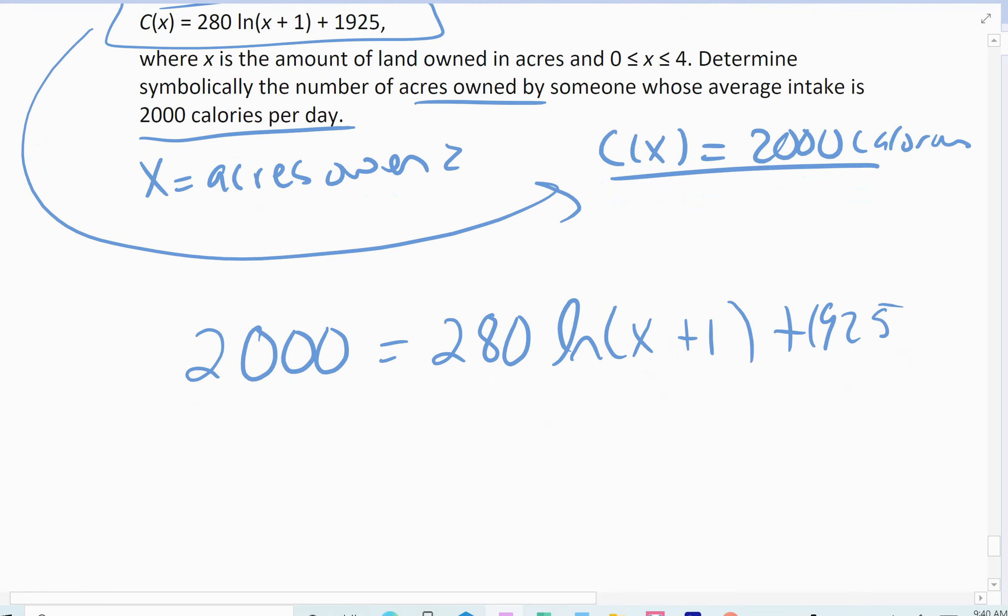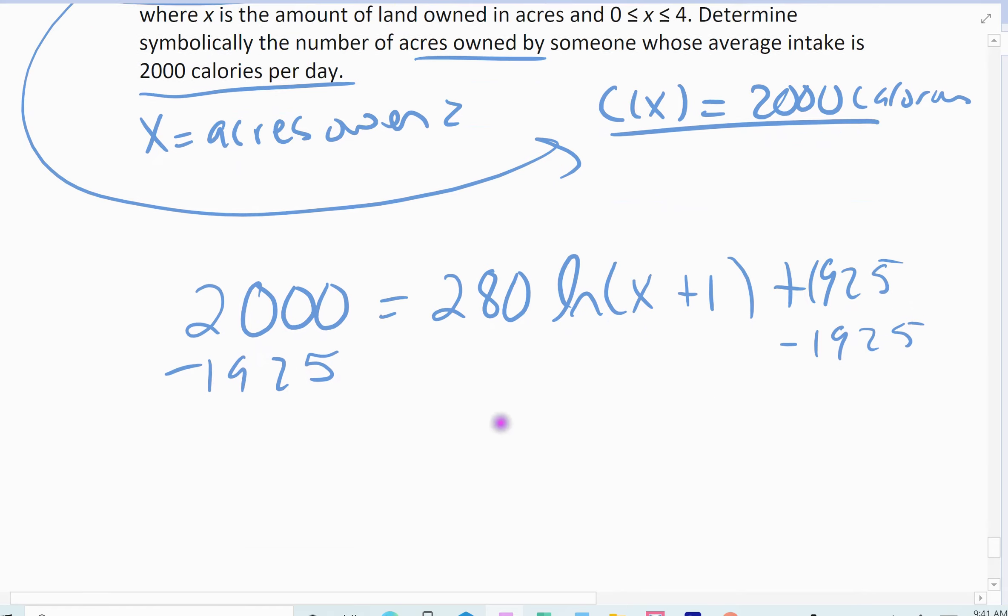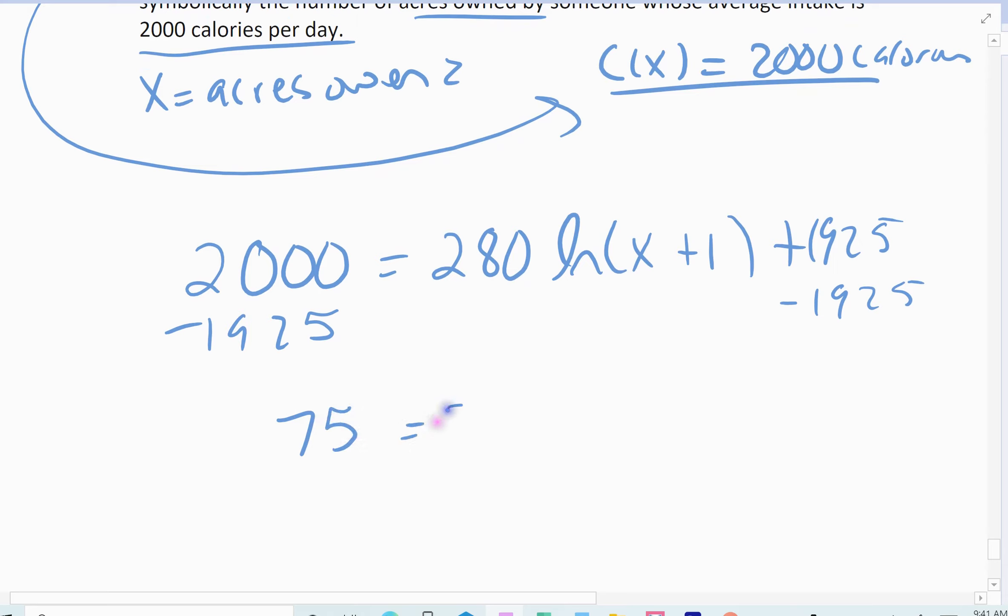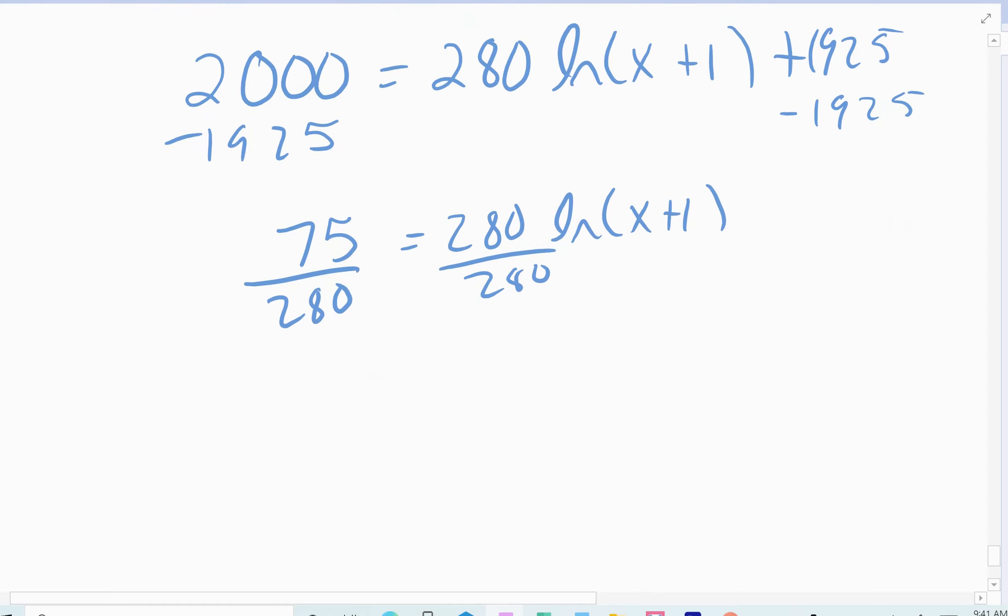All right, first thing, isolate the natural log. So subtract that 1925. So 75 equals 280 natural log of x plus 1. Divide by my 280. Leave that fraction exact. So either leave it 75 over 280 or reduce it to 15 over 56.